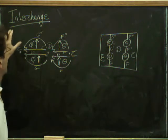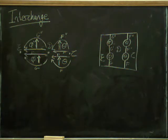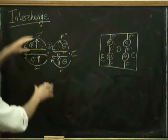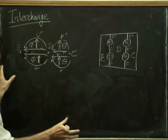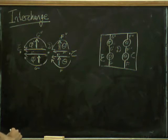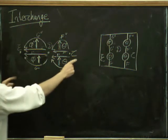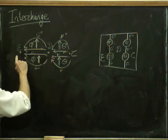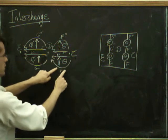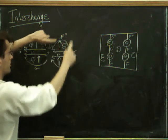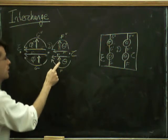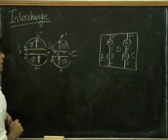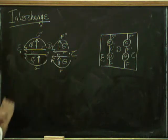So we've got the notion of the interchange rule for composition of natural transformations. If we have four natural transformations, and hopefully I've drawn these sensibly here, so we're going from category C to D, and then to E, and we've got functors F, F' and F'' from C to D, and we've got natural transformations from F to F', F' to F'', and similarly on this side here.